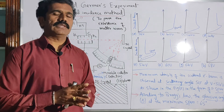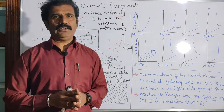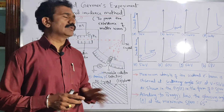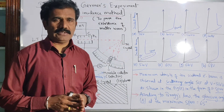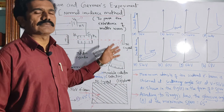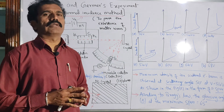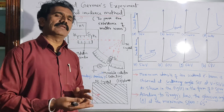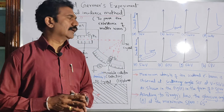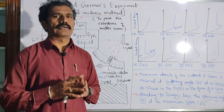If the electrons are behaving like waves, then what is the wavelength of such matter waves associated with the electron beam? Now let us discuss this very interesting experiment. Before that, another experiment to prove the existence of matter waves is the G.P. Thomson experiment. In that experiment also, we are able to find the wavelength of electron beam, and this is another experiment to give more evidence for the existence of matter waves. We can conclude that the electron beam is behaving like a wave — wave nature is also possible for electron beam.